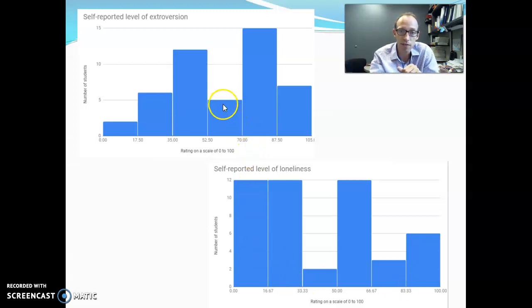Similarly, we can say five students rated their level of extroversion, how extroverted they are, as somewhere between 52.5 and 70.